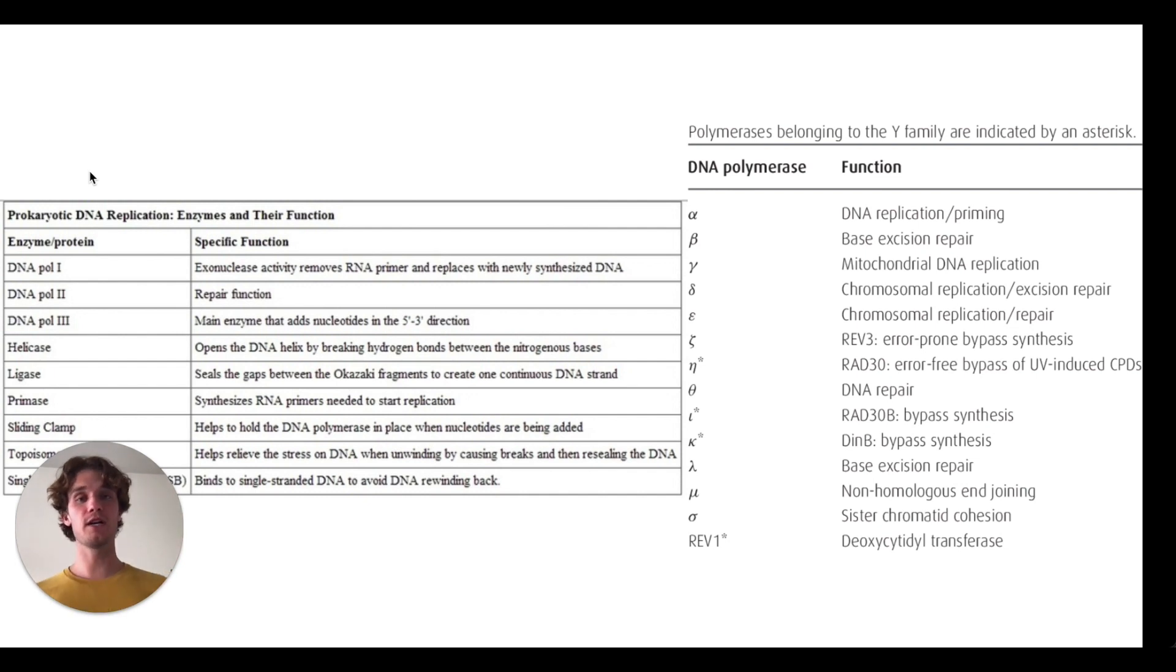The polymerase is responsible for properly matching up the nucleotides together, but sometimes it makes mistakes. Polymerase 1 and polymerase 3 can go back and correct errors in prokaryotes. In eukaryotes, we only have one real polymerase, and that DNA polymerase will go back and correct it.